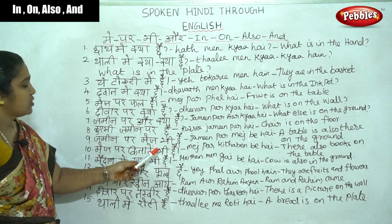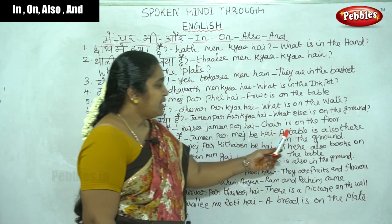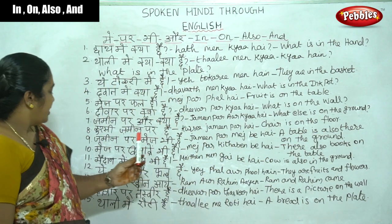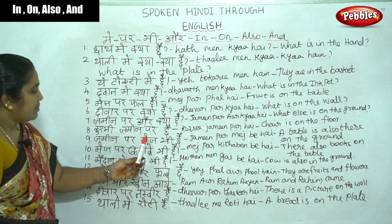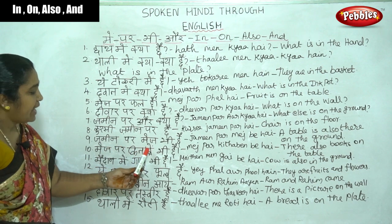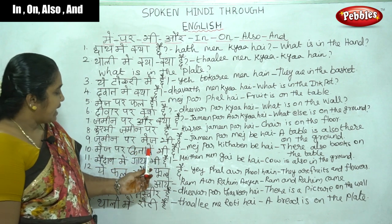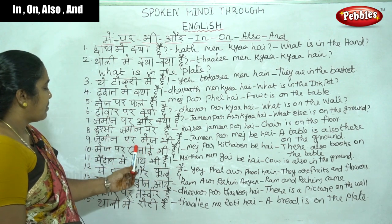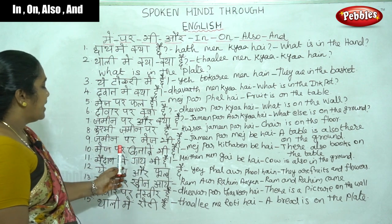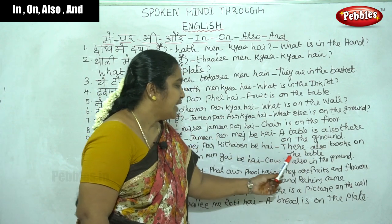Bi means also. Jamin par mej bi hai — a table is also there on the ground. Mej par kitabe bi hai. Kitabe is the plural format of kitab — kitabe means books. Mej par kitabe bi hai — there are also books on the table.